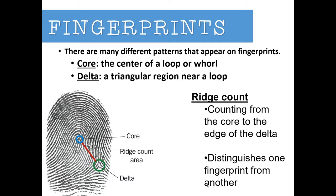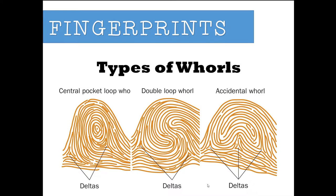You can also have something called a ridge count, which is a quantitative measure that fingerprint analysts use by counting from the core of the fingerprint to the edge of the delta. This gives them a number — it's the number of ridges that pass from the core to the delta — and it's a better way to quantitatively distinguish one fingerprint from another.